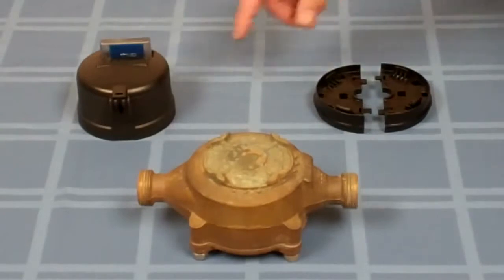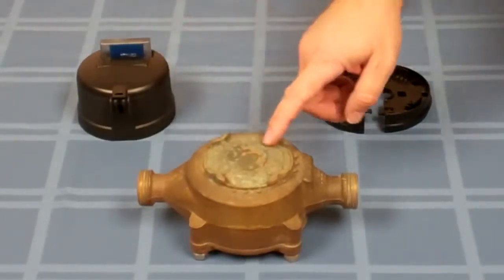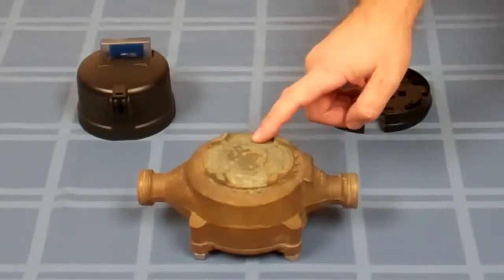I'm here today to show you how to install the new Innovate electronic register on an older PD meter. In this case, a Badger 5/8 inch.